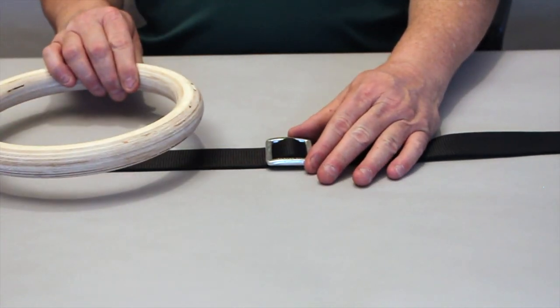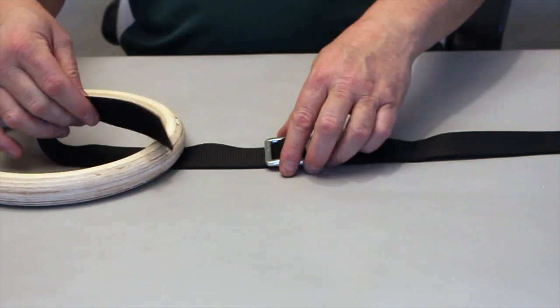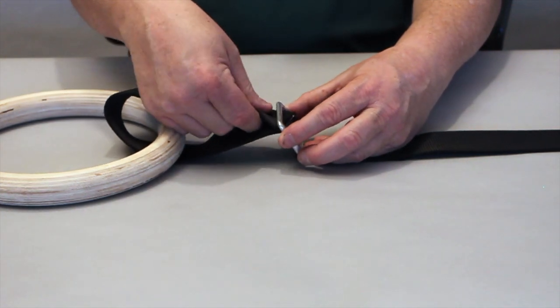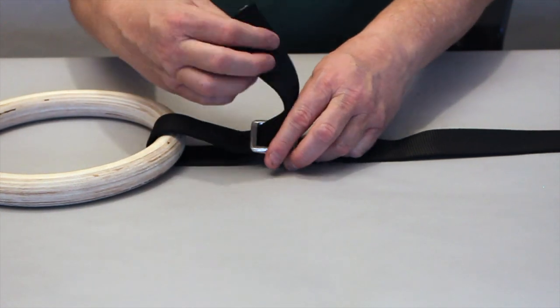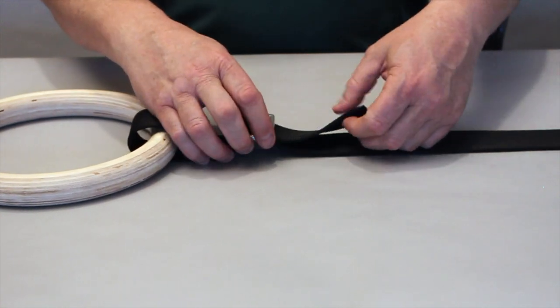Place your ring in the desired position. Insert the strap in the bottom, over the bridge, and out the bottom as shown.